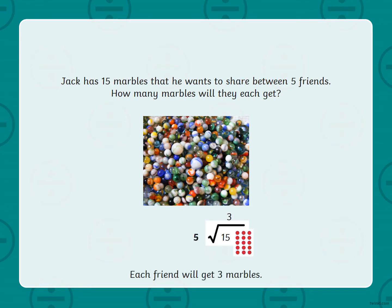So here we can see that 15 goes underneath our division bracket. On the outside, we're dividing it by five groups or five friends. I've also put in a bit of an array because there's five people that we're sharing between. We've got five rows in our array, and if I shared 15 out, there would be three in each row. So therefore our answer at the top is three.